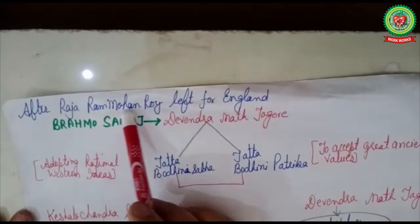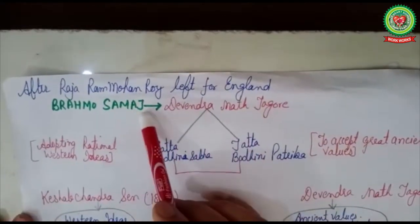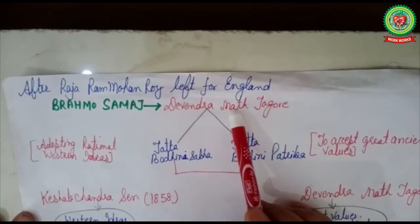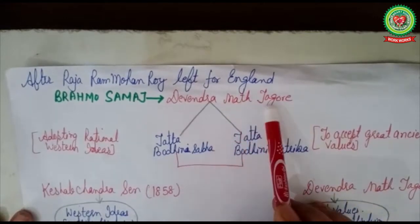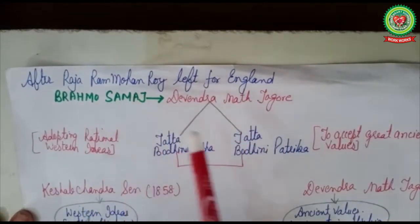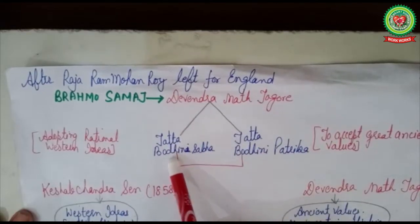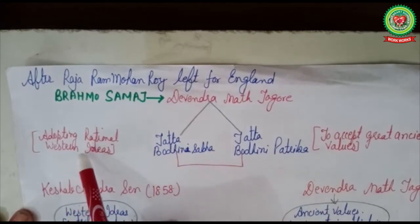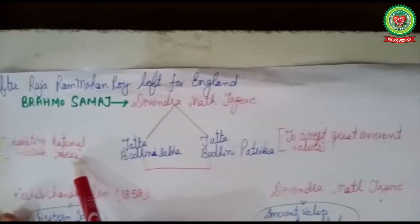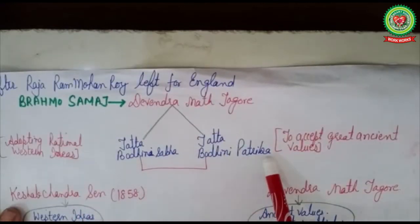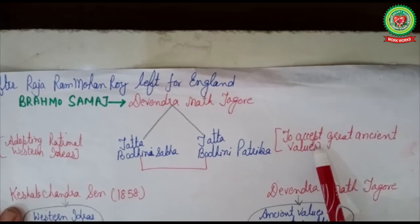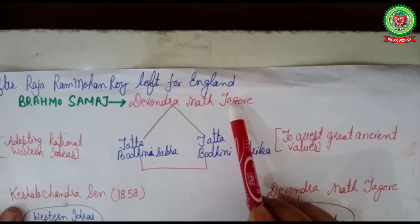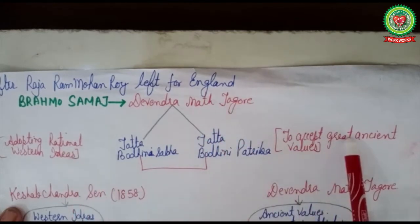After Raja Ram Mohan Roy left for England, Brahmo Samaj came under the leadership of Debendranath Tagore, who was the father of Rabindranath Tagore. For the propagation of Brahmo Samaj, Debendranath Tagore founded two organizations: Tattvabodhini Sabha and Tattvabodhini Patrika. The Tattvabodhini Sabha adopted rational western ideas while also accepting great ancient values — so like Raja Ram Mohan Roy, Debendranath Tagore also believed in the amalgamation of western and Indian ideas.